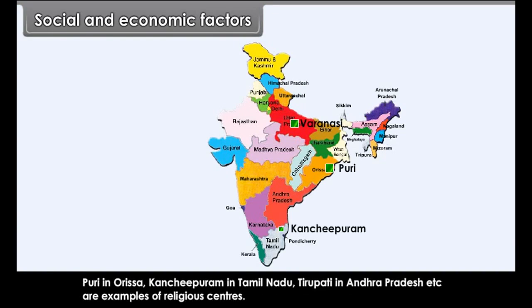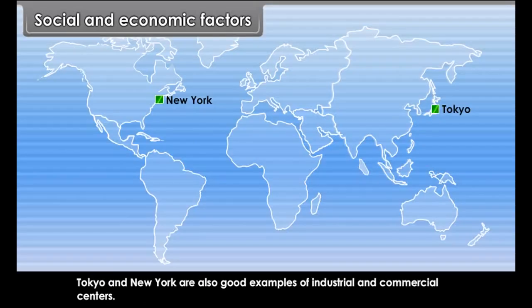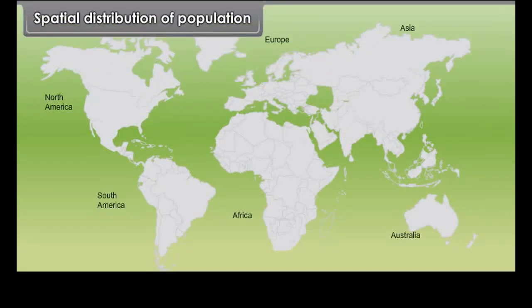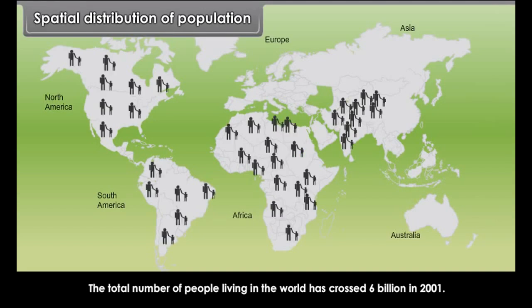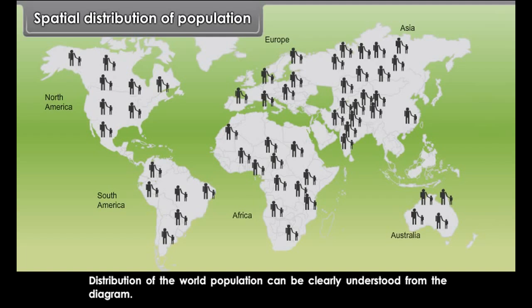Social and Economic Factors. Religious, cultural, industrial and commercial centers attract people from all over the world. Examples of religious centers in India include Varanasi in Uttar Pradesh, Puri in Orissa, Kanchipuram in Tamil Nadu, and Tirupati in Andhra Pradesh. Industrial centers in India include Mumbai, Bangalore, Kolkata, and Delhi. Tokyo and New York are also good examples of industrial and commercial centers.